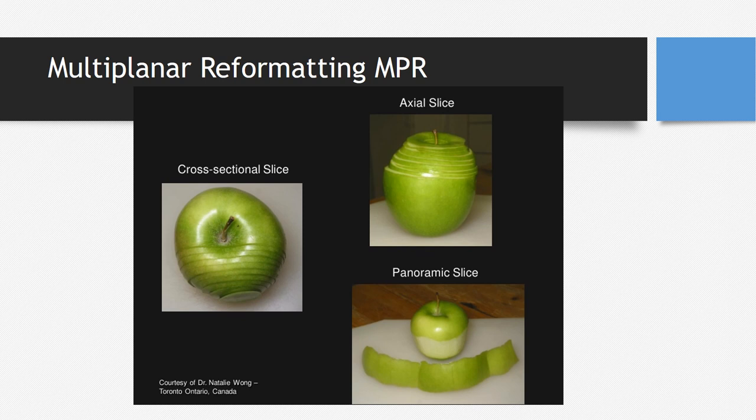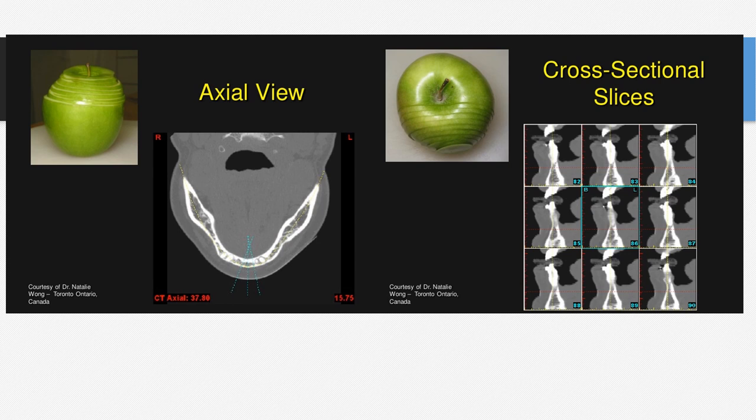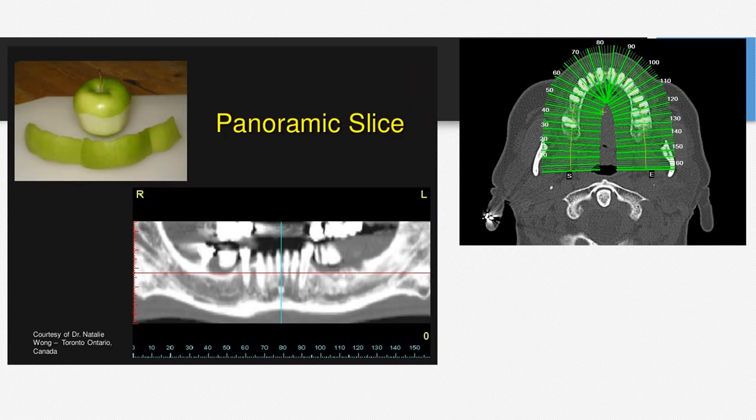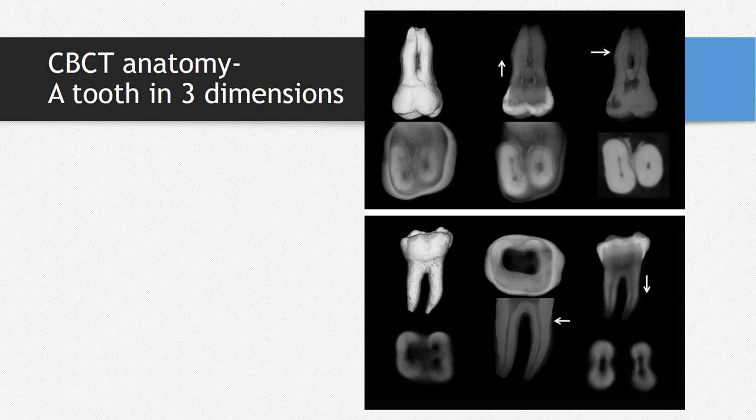The panoramic slice is either generated manually or the CBCT software does it for you based on the chosen site, making it virtually similar to looking at a panoramic radiograph after 3D volumetric imaging. CBCT also gives you 3D anatomy of a tooth — this example of an extracted tooth shows details of the pulp, pulp chambers, root morphology, and crown morphology in much more detail, visible from all different planes.